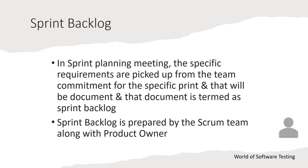The second artifact is the sprint backlog. Once the product backlog document is prepared, the sprint planning meeting happens and the scrum team is part of this meeting. In the sprint planning meeting, specific requirements are picked by the team as their commitment for the upcoming sprint.